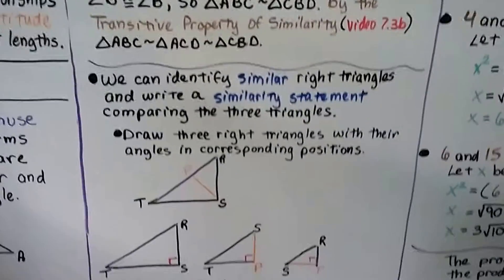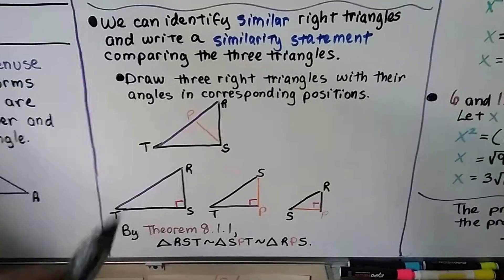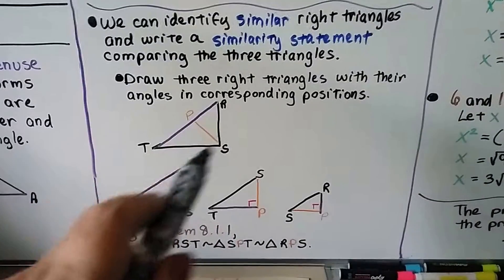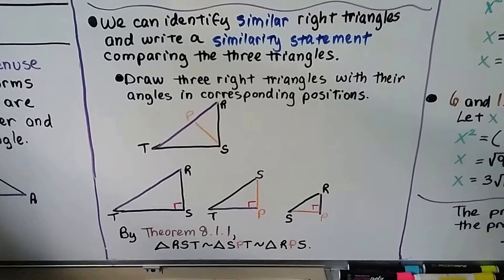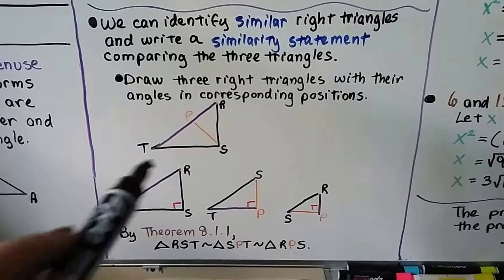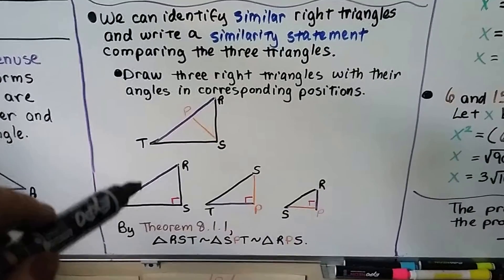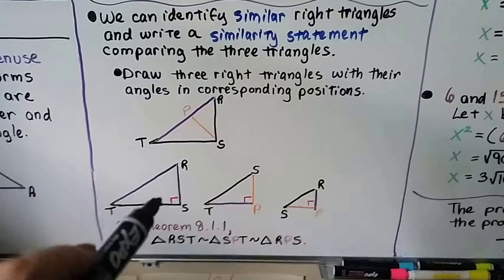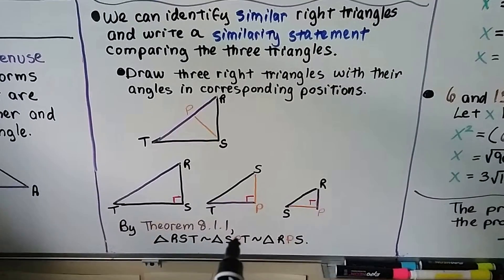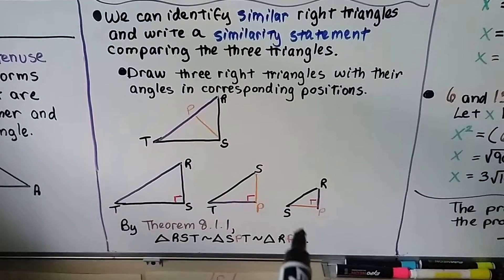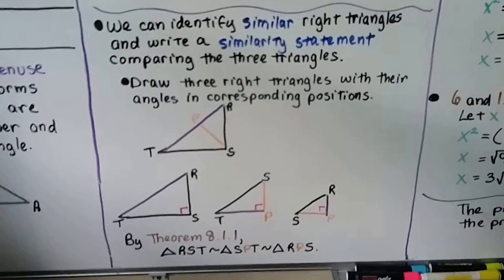We can identify similar right triangles and write a similarity statement comparing the three triangles. This one triangle, because of this altitude, is three triangles. We draw three right triangles with their angles in corresponding positions. So our big original one, RST, is similar to triangle SPT, which is similar to triangle RPS.